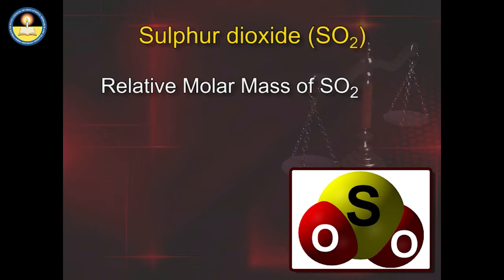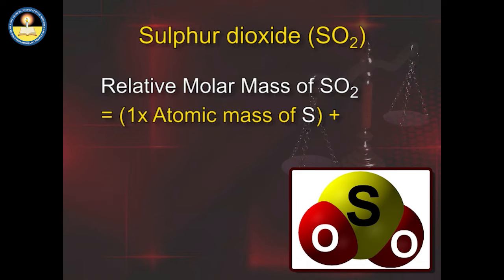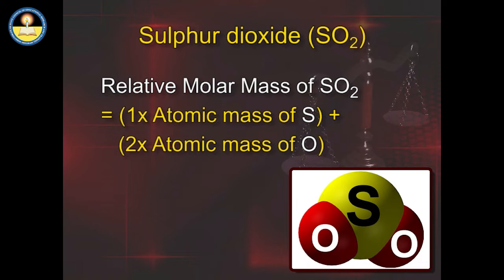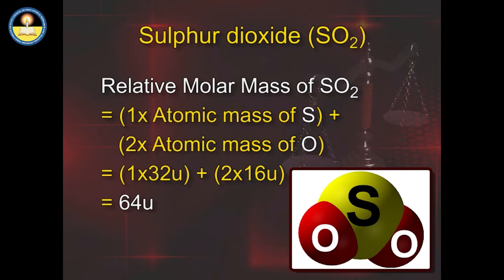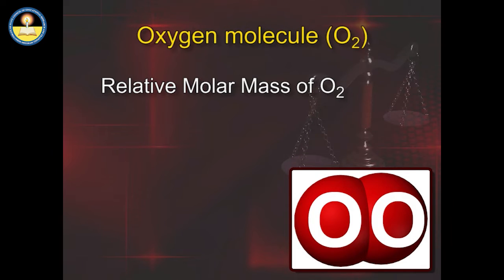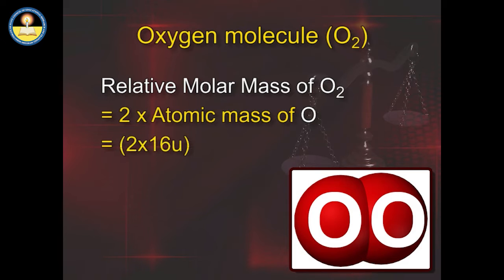Relative Molecular Mass of sulfur dioxide SO₂ equals 1 × atomic mass of sulfur plus 2 × atomic mass of oxygen, which equals 32U plus 2 × 16U, giving 64U. Relative Molecular Mass of O₂ equals 2 × atomic mass of oxygen, which equals 2 × 16U, that is 32U.